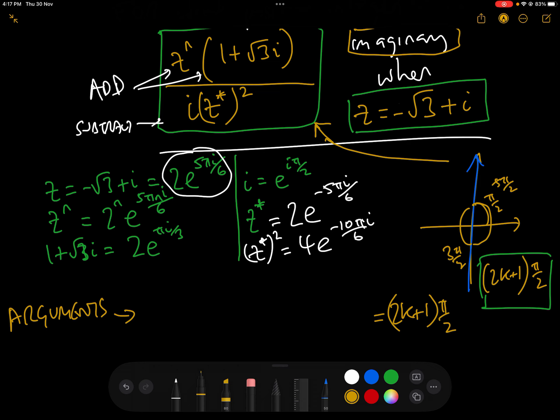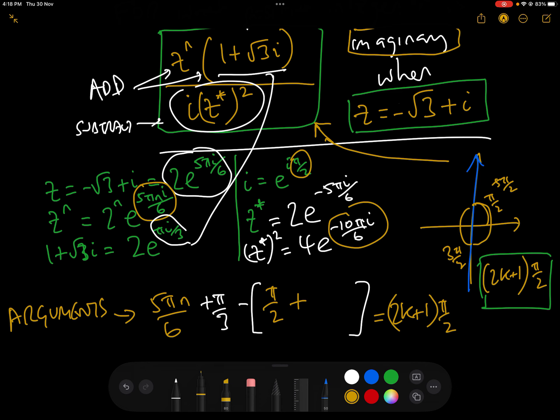So the argument of z to the n is 5 pi n over 6. The argument of 1 plus root 3 i is pi over 3. Add pi over 3. Now we're taking away the two arguments on the bottom because we are dividing. So the argument of i is pi over 2. And the argument of z conjugate squared is minus 10 pi over 6.